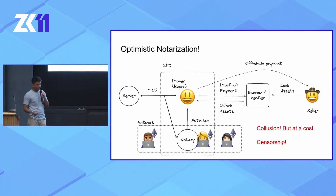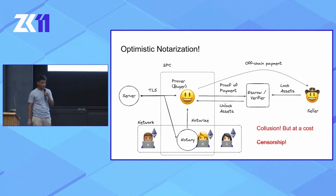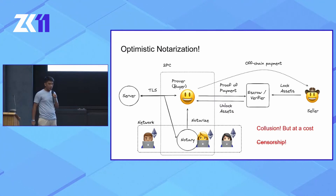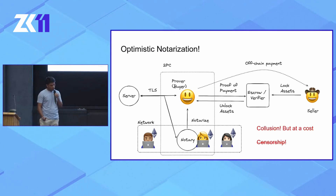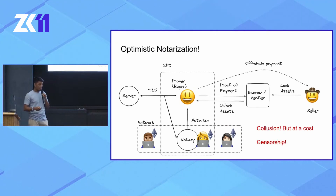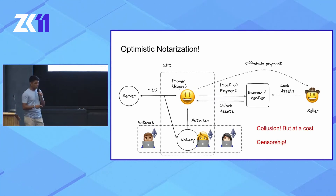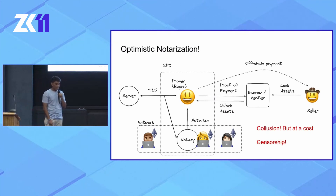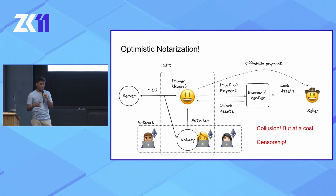To solve all of the problems — collusion, censorship, and bad UX — we came up with the optimistic notarization flow. In this flow, the seller is no longer the notary. Instead, you have a dedicated network of operators acting as the notary, each with a stake on the network. Any one of these notaries is randomly selected for the notarization, and we optimistically assume the notarization is correct with no collusion, and unlock the assets. There's no more censorship because if the chosen notary refuses to notarize, you can always request another notary. This is also good UX because you're running the 2PC TLS verification with just a single notary, which is cheap.